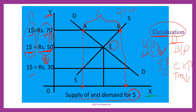On behalf of the government, the RBI is going to purchase this excess supply of dollars. The exchange rate is maintained, and the RBI purchases the excess dollars on behalf of the government to keep the fixed exchange rate stable.